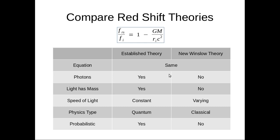Established theory has photons. The new Winslow theory does not, just electromagnetic waves. Light has mass. The established theory says yes. The new Winslow theory, even if it does have mass, it doesn't take part in the derivation of the equation.